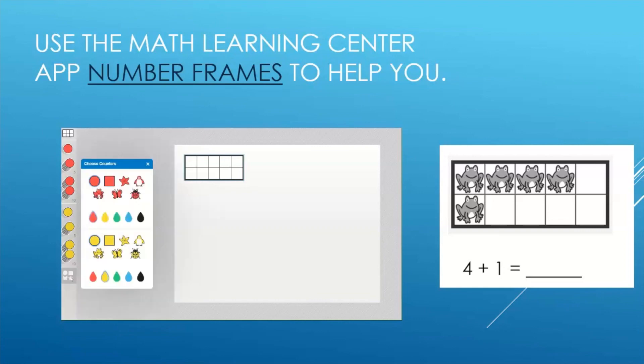And you'll notice that we have the choice of a frog counter. We're going to choose the frog counter. And I'm going to choose green. We're going to have a green frog. Now we have to make our 10 frame look like what we have in our packet. I know that we have four frogs in the top row. And we have one frog in the bottom row.